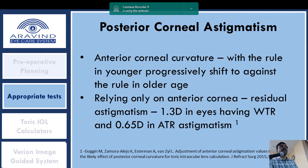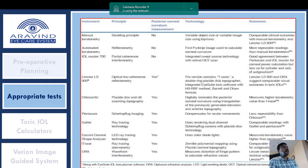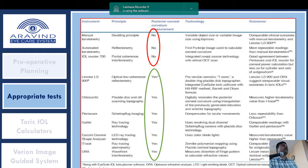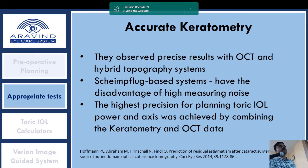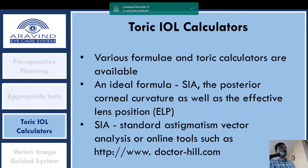Posterior corneal astigmatism is highlighted as an important factor in toric IOL implantation. Comparing various keratometers, manual and automated keratometers and older IOL Masters do not measure posterior corneal curvature, whereas newer IOL Master, LenStar, OPScan, Pentacam, and Galilei do. Hoffman et al. evaluated five systems and found the most precise results with OCT and hybrid topographer systems. Scheimpflug-based systems have high measuring noise despite measuring posterior curvature, so combining keratometry with OCT data gives the highest precision.